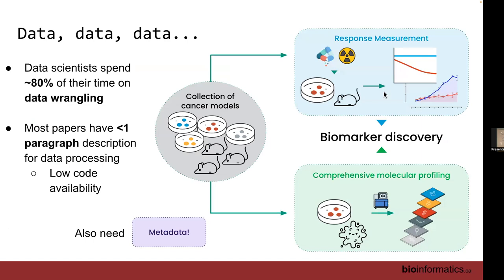Even when you're looking at datasets that are published — a paper comes out, they have a new dataset, they do analyses with it — when they actually publish the data, there's usually very limited information on how the data was processed, very little metadata, and usually no code on how they did it. So it's really hard to reproduce results. Even when they release their data, you can't get the same values they had when doing their analysis. This is a really big problem.